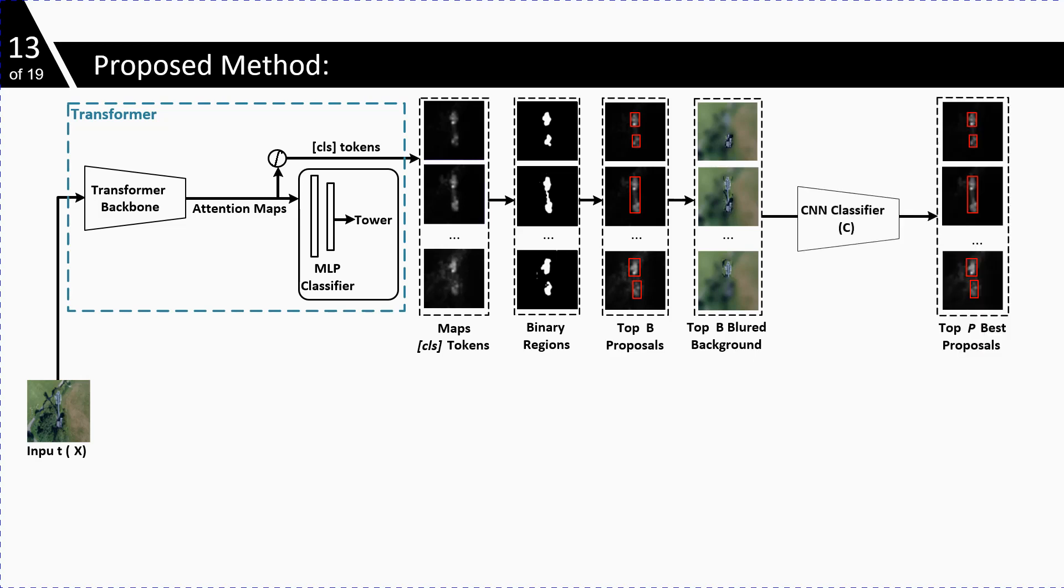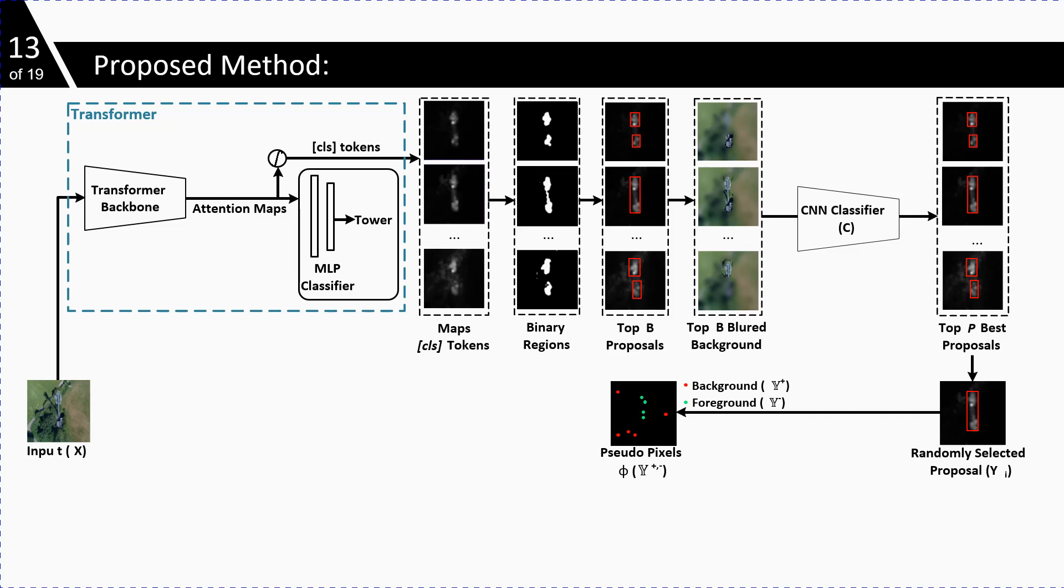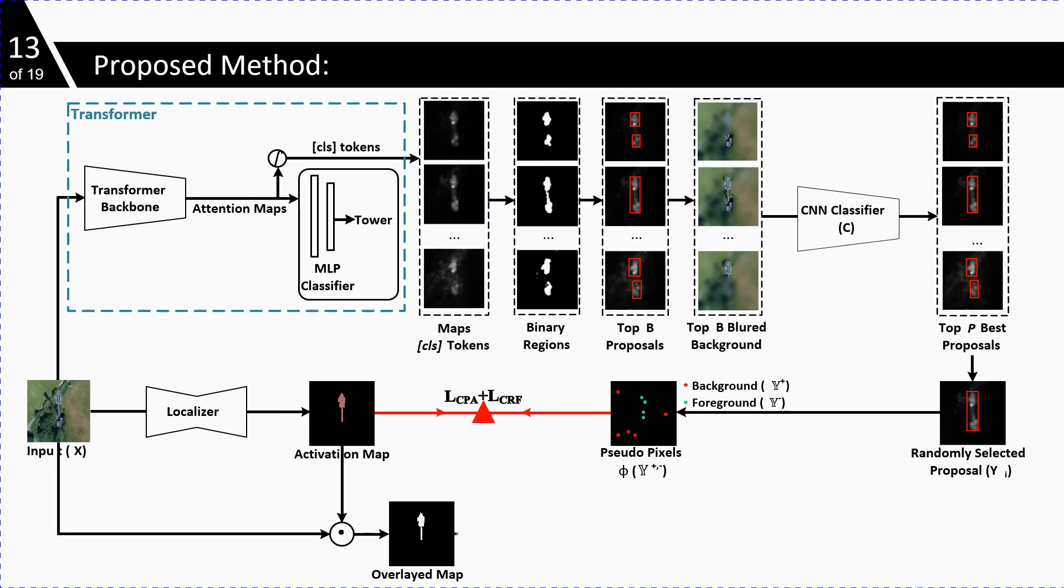The classifier will help us to select the top p-best proposals and from them one proposal is randomly selected for harvesting foreground and background regions. These pseudo-labels are then used to calculate loss for the generated localization map. In addition to this, we also apply a classification loss by overlaying the generated activation map onto the input image and passing it through a classifier to update the weights of the localizer.